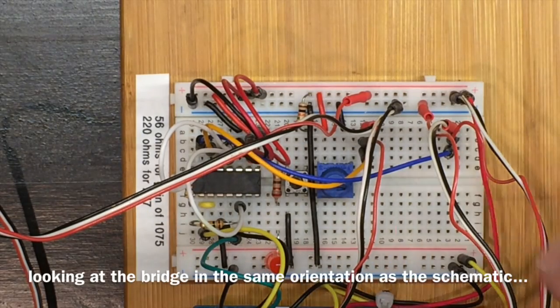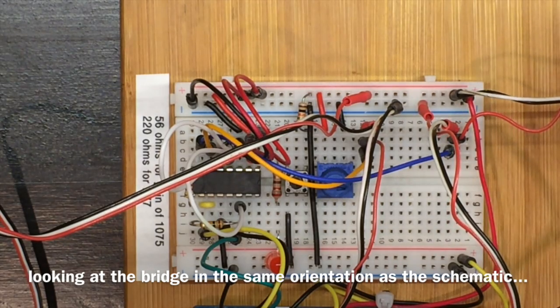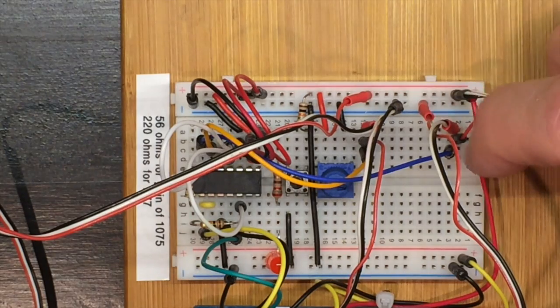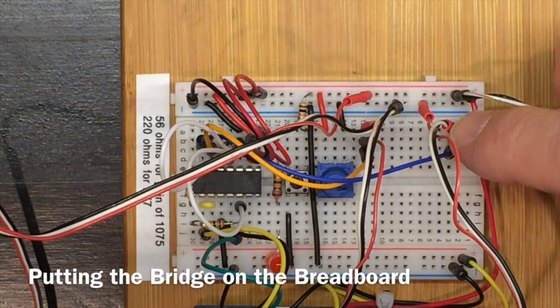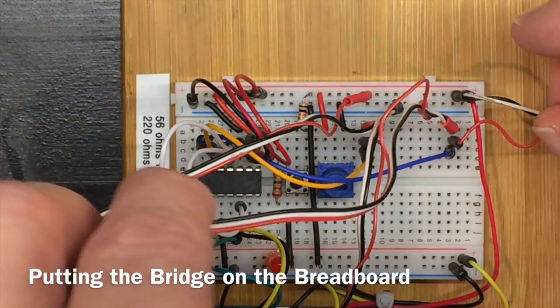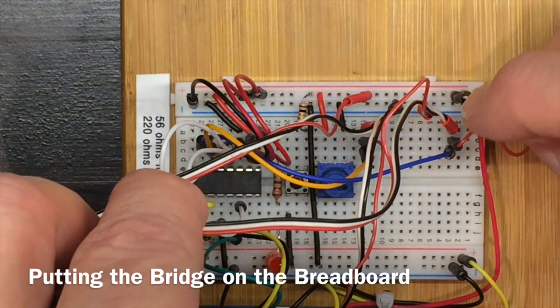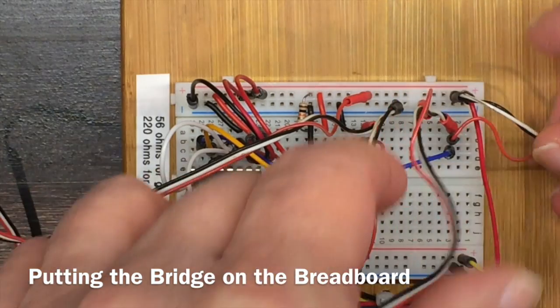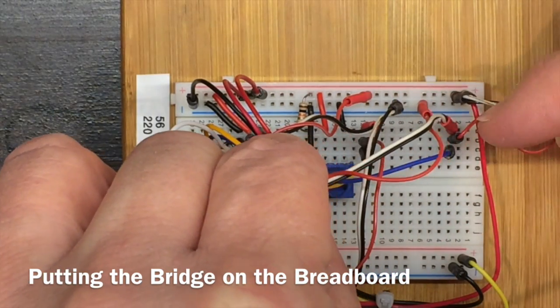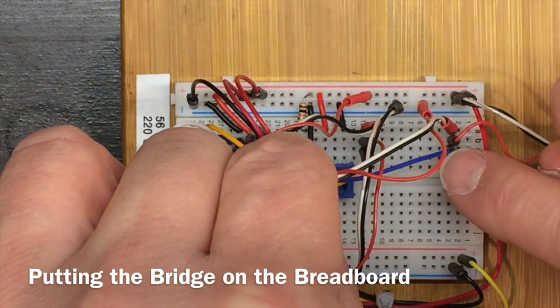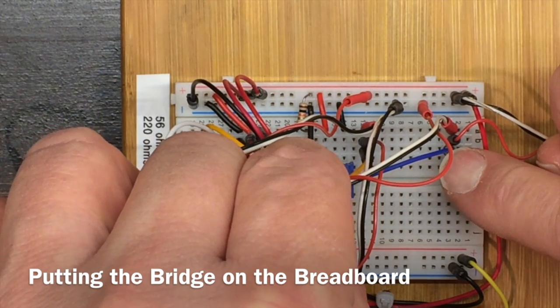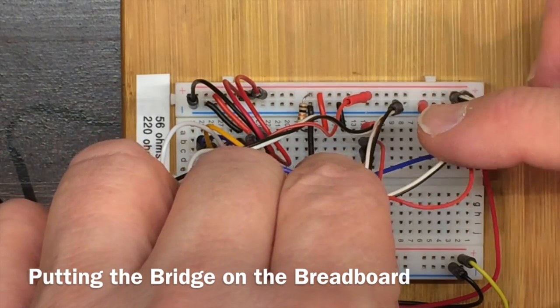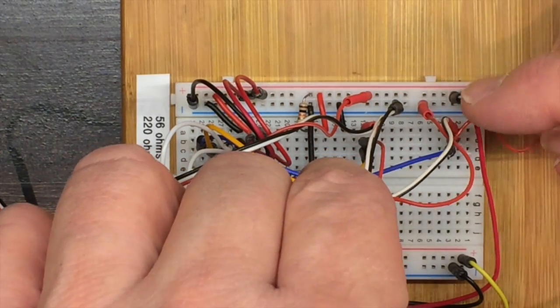I've hooked up the gauges to form a Wheatstone bridge. So this is one of the gauges that's on top and it's connected between positive and a point over here on the breadboard. This is one of the gauges from on the bottom and it's connected between that point on the breadboard and negative. So between the two of them, they form a voltage divider and the voltage on this blue pin is about 2.5 volts because these resistances, these strain gauges, are about equal.